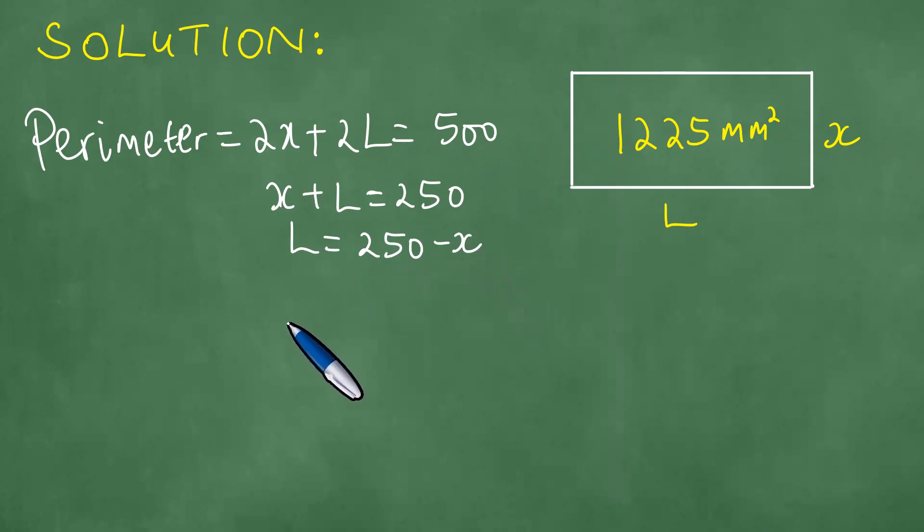So we have got the result here, but now we need to also examine the area. Because we know that the area of these, you can write it as length by the breadth, but it is 1225 square millimeters.